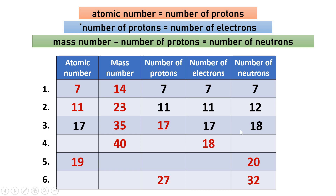For number four, the mass number is 40 and the number of electrons is 18. Since the atom is neutral, the number of electrons equals the number of protons, so the number of protons is 18. Since the atomic number equals the number of protons, the atomic number is 18. For the number of neutrons: mass number 40 minus number of protons 18 equals 22 neutrons.